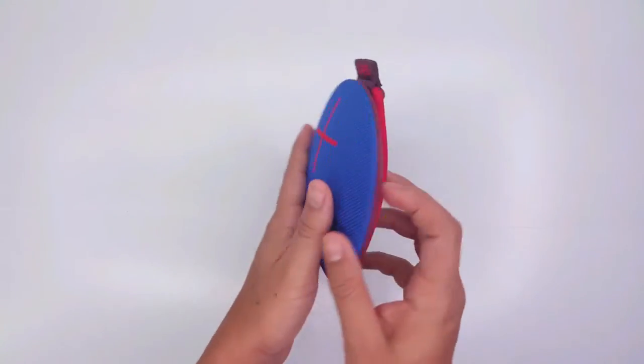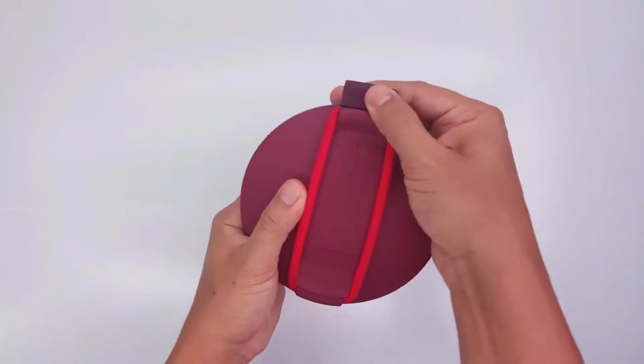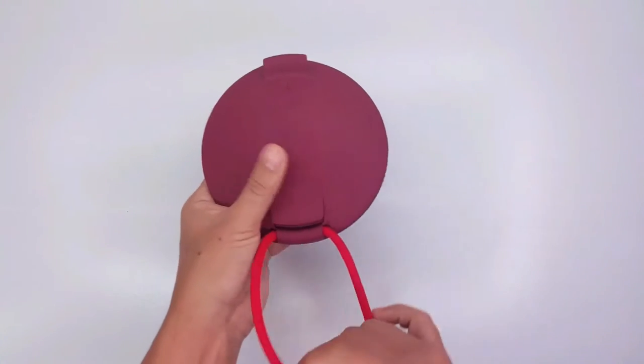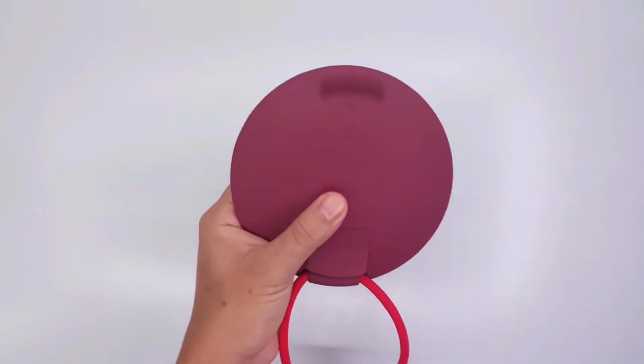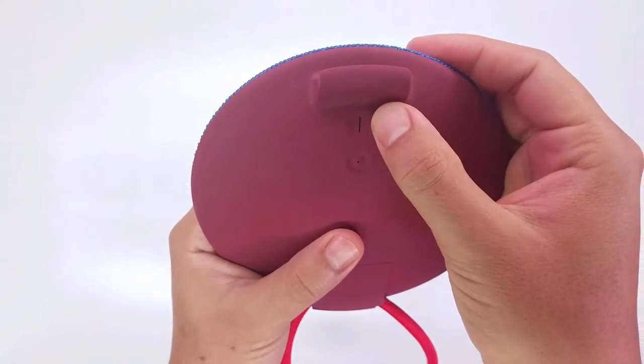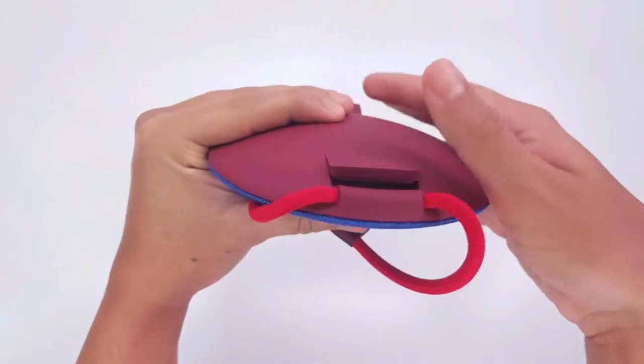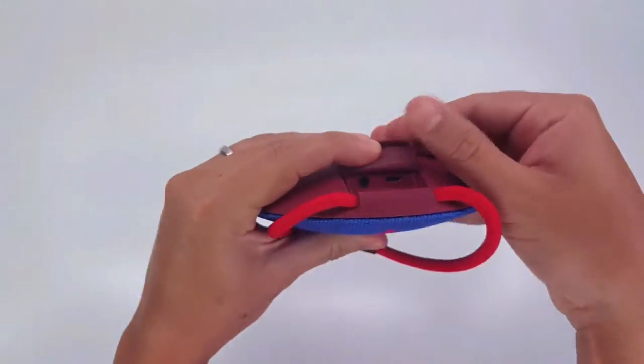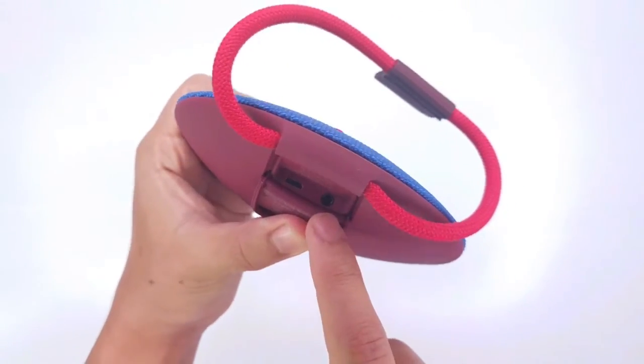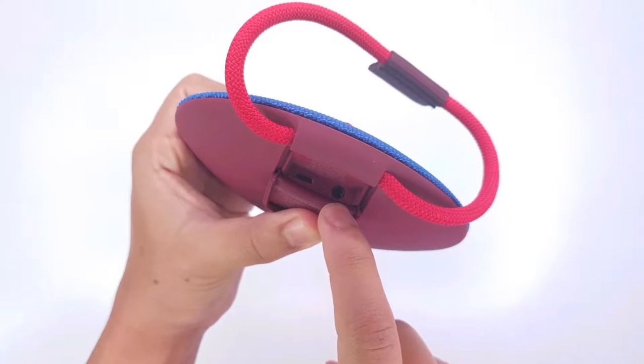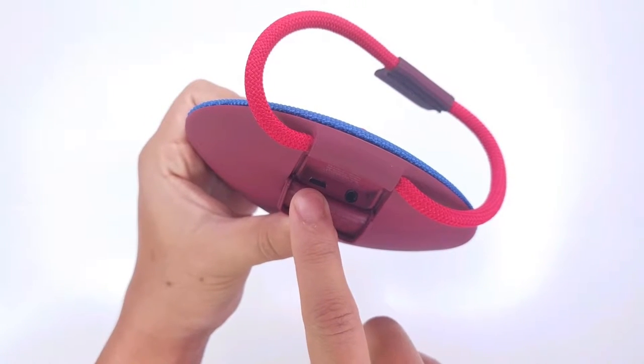Here we have our main device and on the back we have the strap. The strap is really heavy duty guys, really well built. Here we have our on and off button, our LED indicator light and on the bottom we have our auxiliary input and also your micro USB port to charge it.